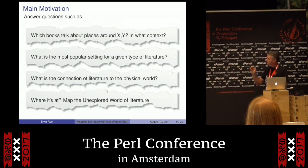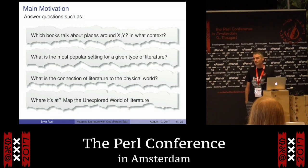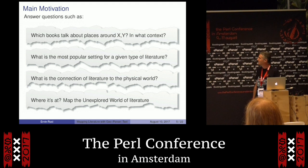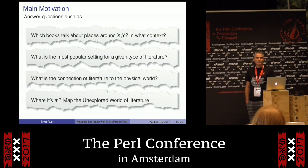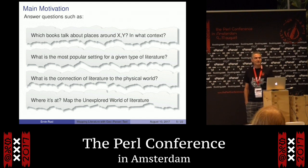My main motivation is I want to ask: which books talk about places around X and Y and in what context? Are they saying good things, bad things? I also want to know, for example, what's the popular setting of romance novels, or techie books, or horror books. In general, I want to examine the connection of literature to the physical world — and maybe build one of those brilliant maps you see people post on Twitter, like what is the unexplored world of literature, or places that nobody has written about, or places that people write about most often.